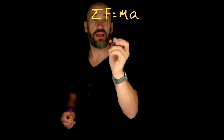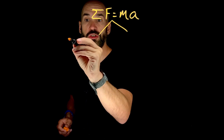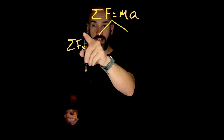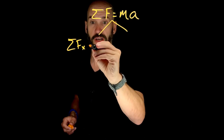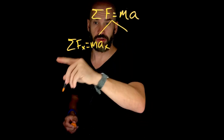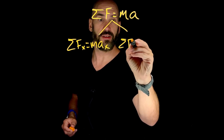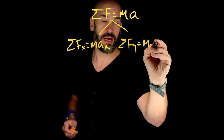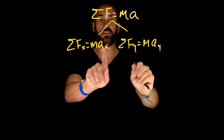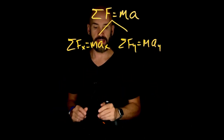If there's a problem that has two dimensions, we need to make sure that the components of the forces in x — the sum of all the forces in the x direction must equal m times a in the x direction, and the summation of forces in the y direction must equal m times the acceleration in the y direction. This is the x and the y component of the acceleration.